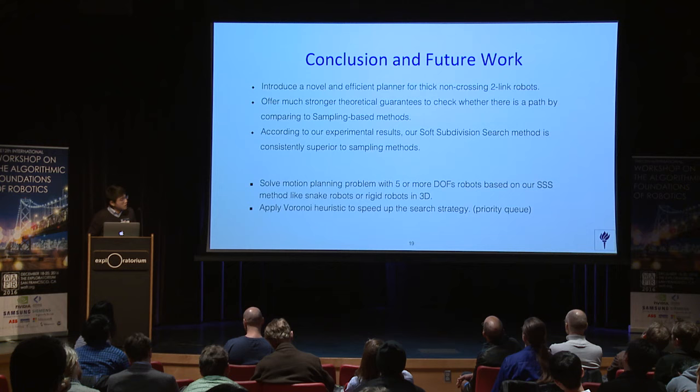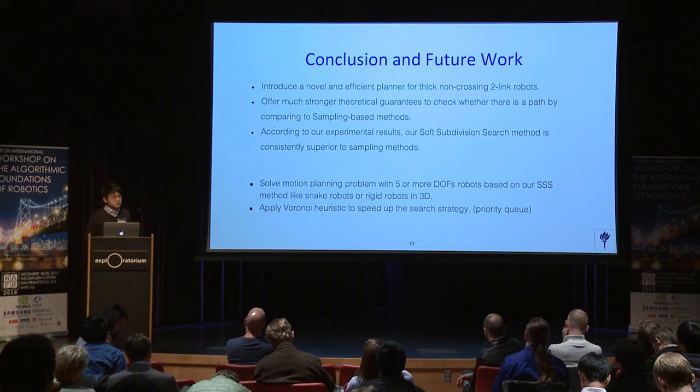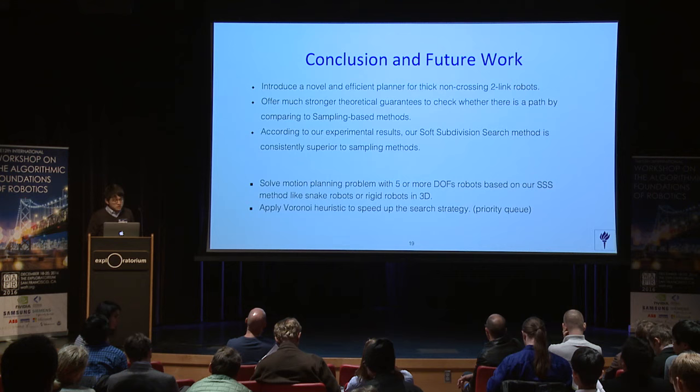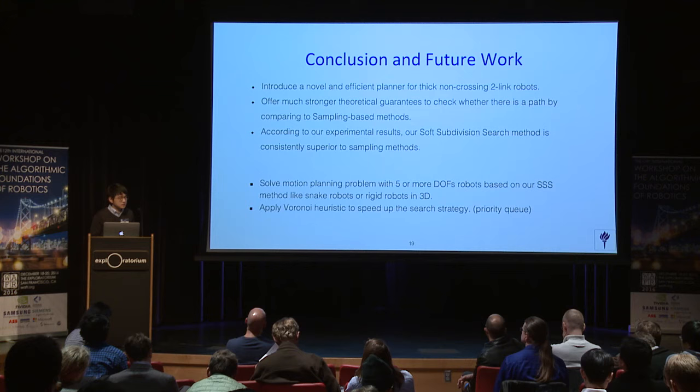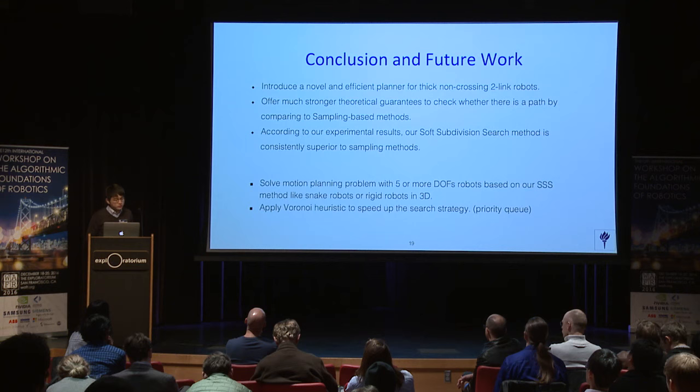To summarize, we have introduced a novel and efficient planner for thick non-crossing tooling robots, offering stronger theoretical support. According to our experiments, our soft subdivision search method is consistently superior to other sampling methods. Future work includes using our SSS method to solve five or more degrees of freedom robots and applying more non-heuristic strategies to speed up the search.